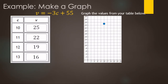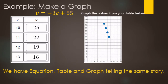Next we plot (11, 22): 11 between 10 and 12, and 22 on the vertical axis. Then (12, 19), and finally (13, 16). So we've represented the relationship between cakes baked and oil remaining in three ways: as an equation, as a table, and as a graph — all telling the same story.